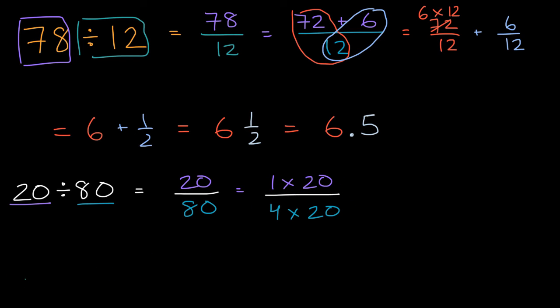And so you could just view this as being equal to one-fourth, so this is equal to one-fourth, times 20 over 20. Times 20 over 20. Well, what's 20 over 20? Well, that's just 1. That's just 1. So this all just becomes one-fourth.